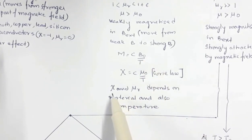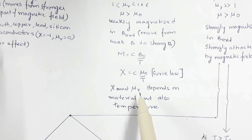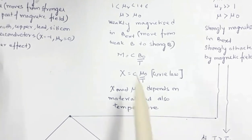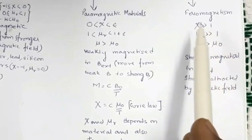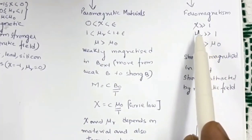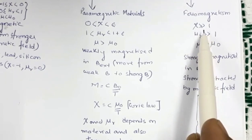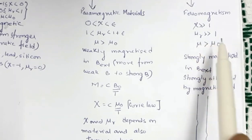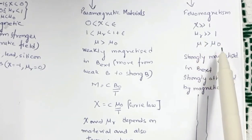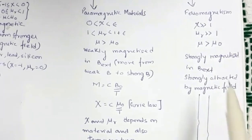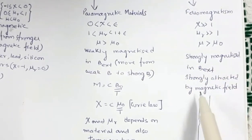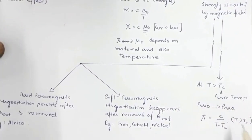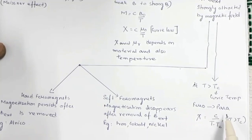Magnetic permeability and relative magnetic permeability depend on the material, and for paramagnetic materials they also depend on temperature. For ferromagnetic materials, magnetic susceptibility is very much larger than 1, relative magnetic permeability is greater than 1, and magnetic permeability is greater than that of free space. They are strongly magnetized and attracted in an external magnetic field. At temperatures greater than the Curie temperature, ferromagnetic material becomes paramagnetic.